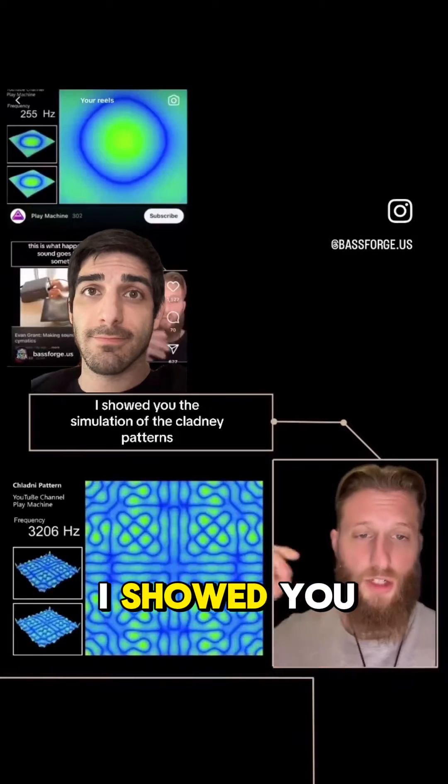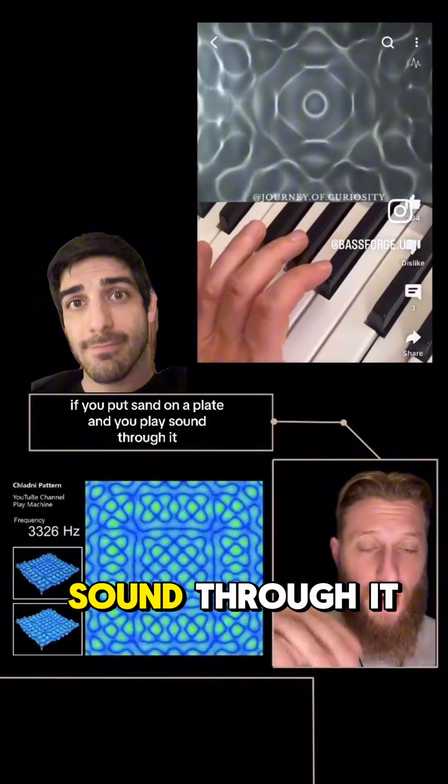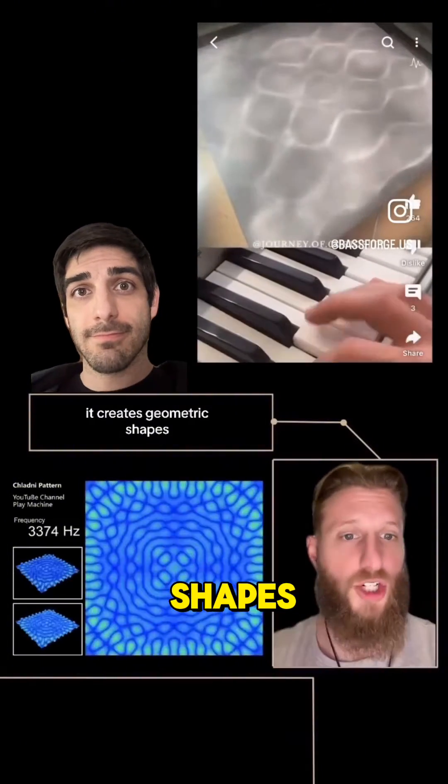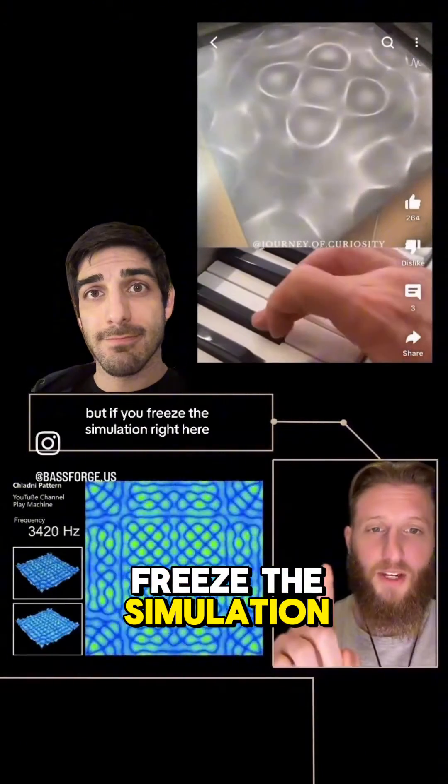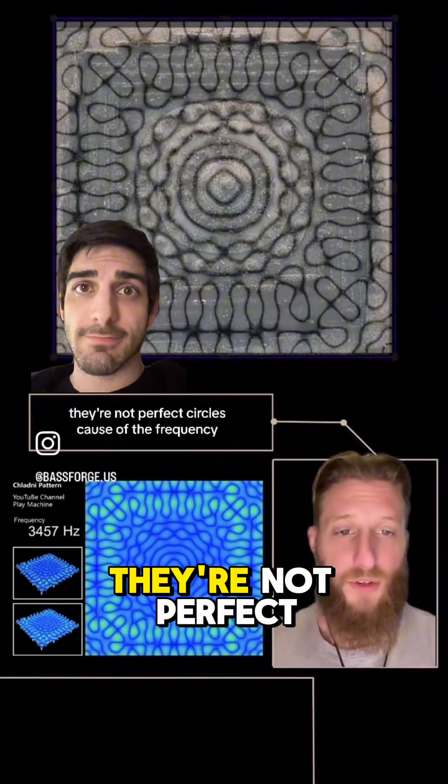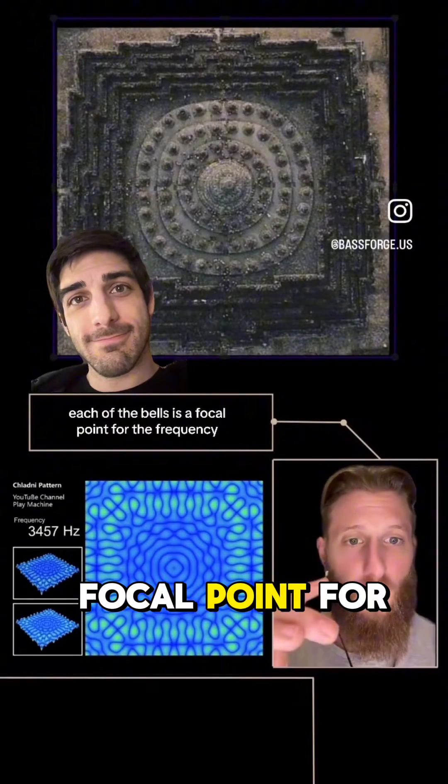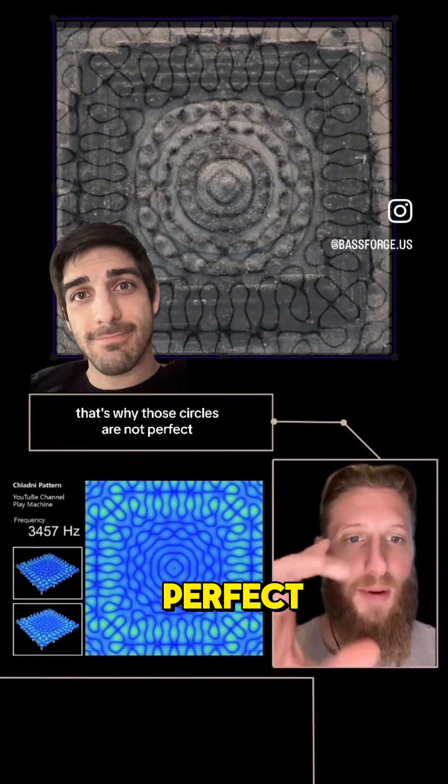In my last video, I showed you the simulation of the Chladni patterns. If you put sand on a plate and you play sound through it, it creates geometric shapes. But if you freeze the simulation right here, yep, it's perfect. They're not perfect circles because of the frequency.